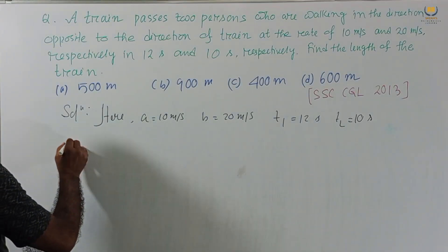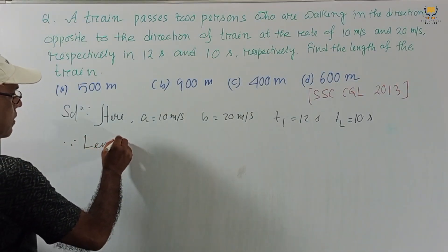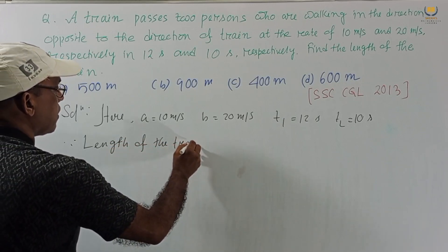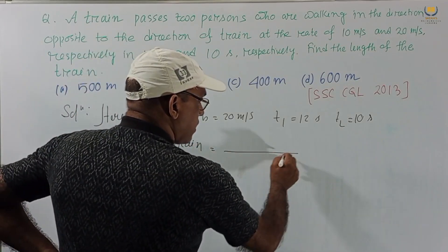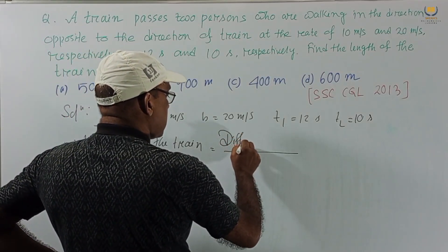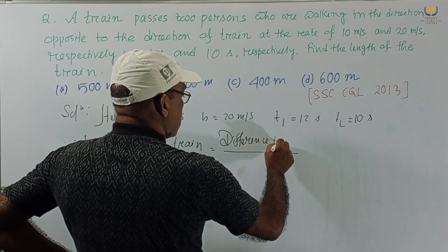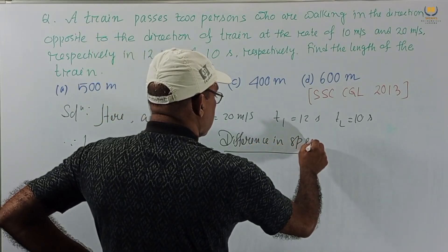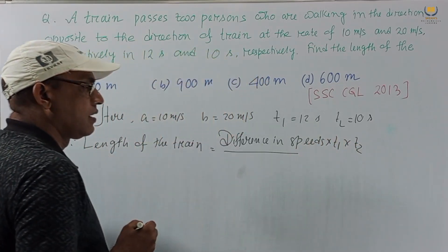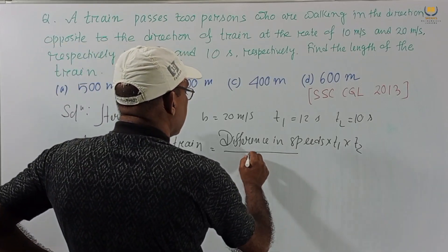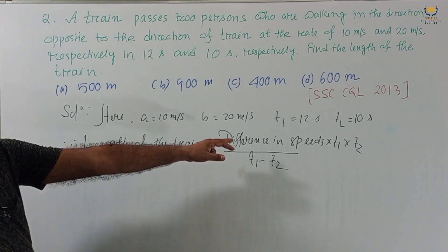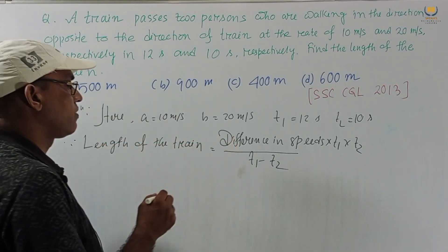The length of the train using Technique 4 formula: since the persons are moving in the opposite direction, the formula is the difference of speeds multiplied by t1 into t2, divided by t1 minus t2.